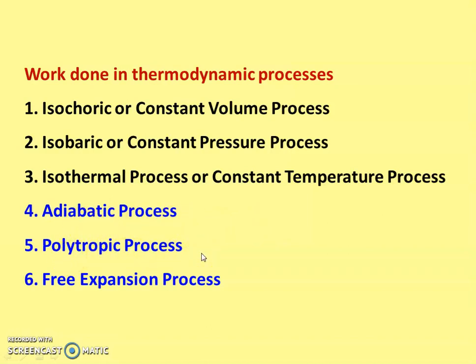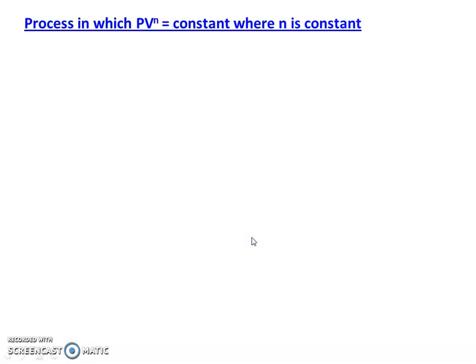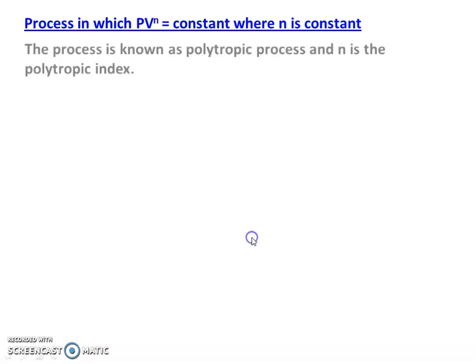We also discuss other forms of work such as free expansion work. The next two processes involve PV to the power n equal to constant, where n is a constant. This process is also called the polytropic process, and n is the polytropic index.